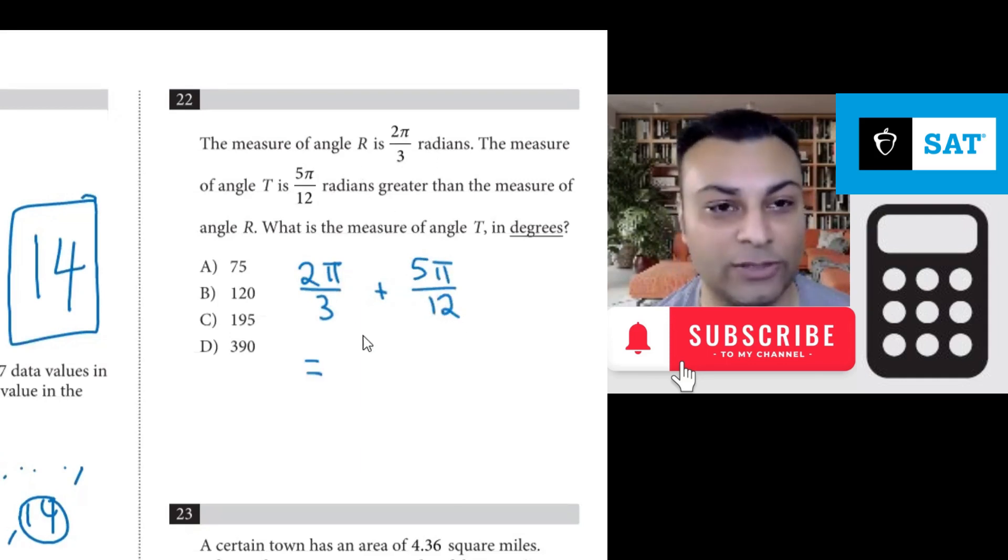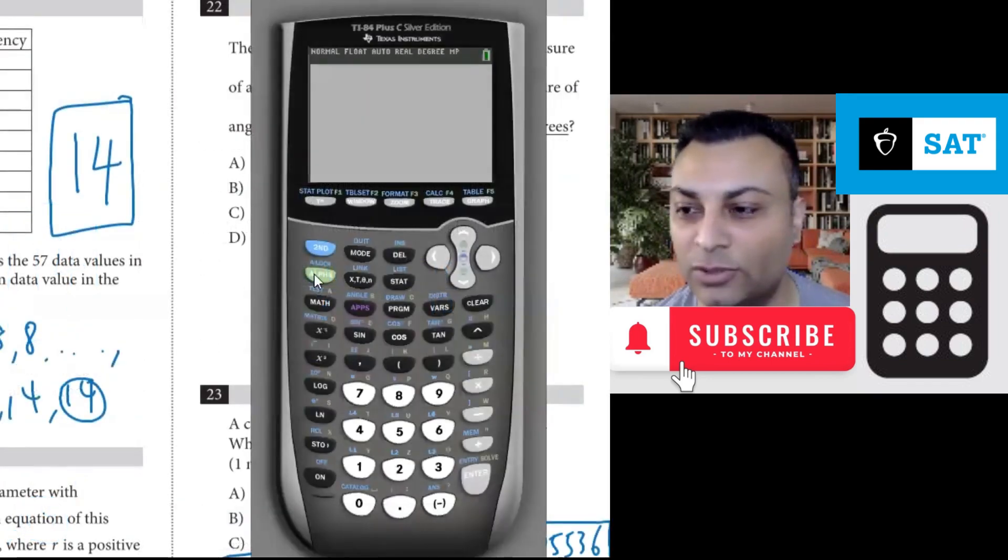Let's do that in the calculator. Okay, so let's go 2 thirds plus a new fraction 5/12.